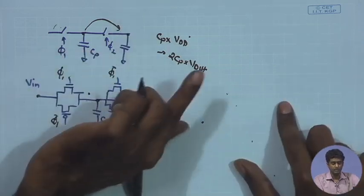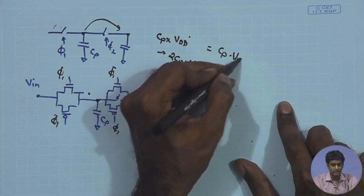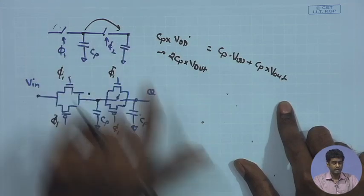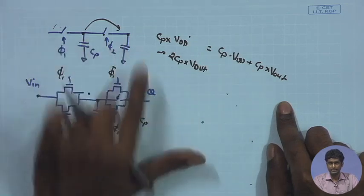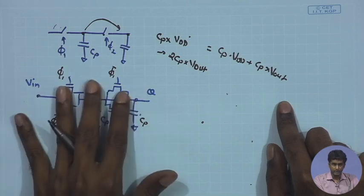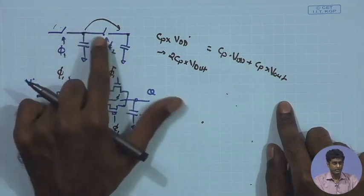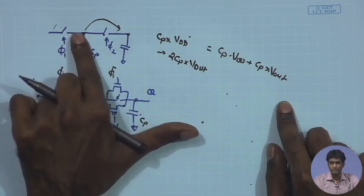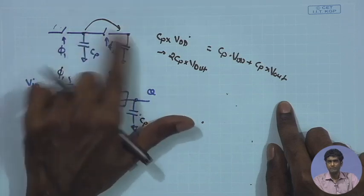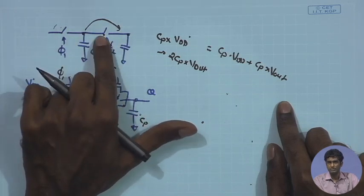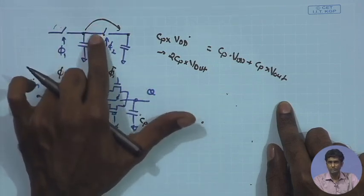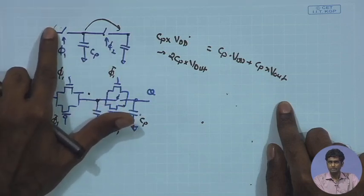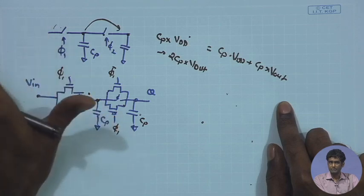In general the result depends on the previous voltage. The charge balance gives Cp·VDD + Cp·Vprev = 2·Cp·Vout, so Vout depends on the previous state. This does not solve the purpose — we are not getting the same voltage level as expected. To preserve the correct level, we need to decouple the two capacitors. If the level was sampled as VDD the final level should also be VDD; if it was ground, it should also be ground.